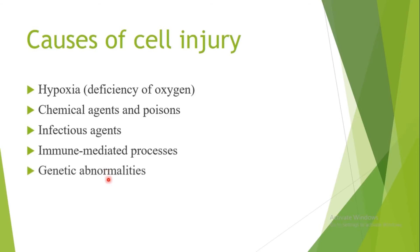Another cause is genetic abnormalities. Genetic abnormalities can lead to cellular injury as a consequence of a deficiency of a functional protein, or by accumulation of damaged DNA or misfolded proteins. When cells are unable to correct these abnormalities, these changes trigger cellular injury.